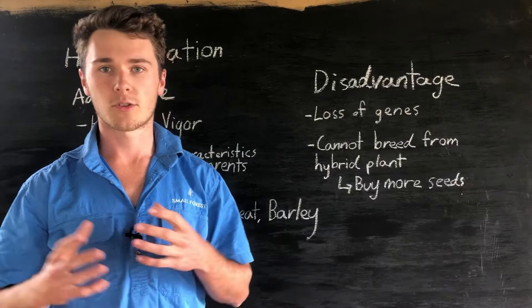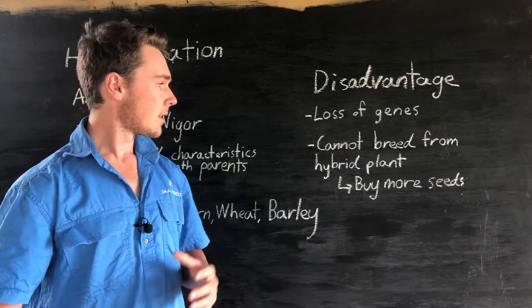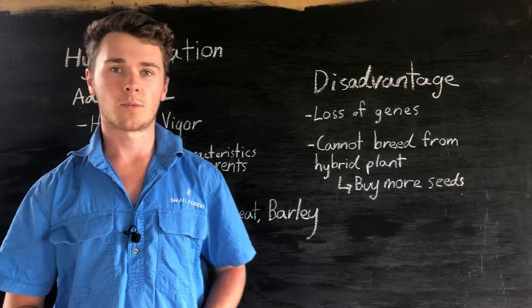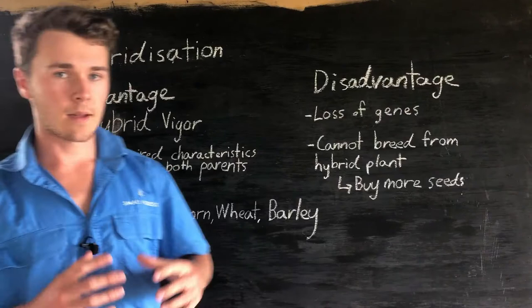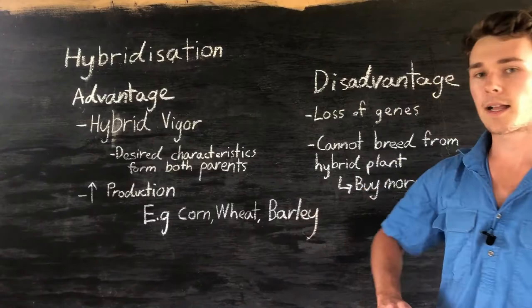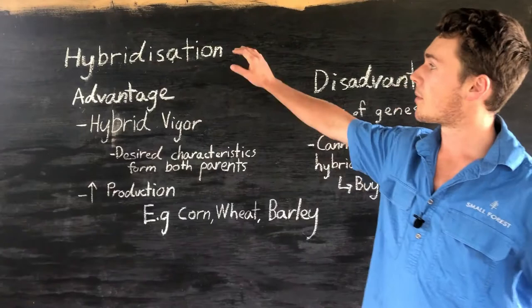Again, we get an ethical concern with hybridization — are we playing God? Is it morally okay to be changing the genetics of our plants? But overall, we get massive efficiency gains with hybridization. Some examples are corn, wheat, and barley. Most plants that you can get commercially are hybrids because we get this massive beneficial hybrid vigor characteristic.